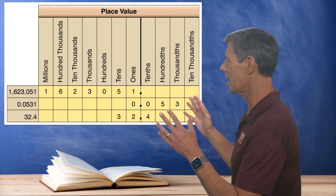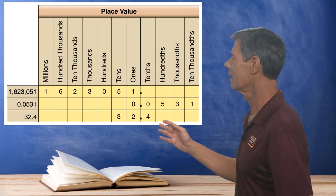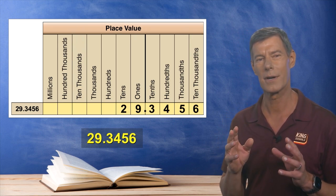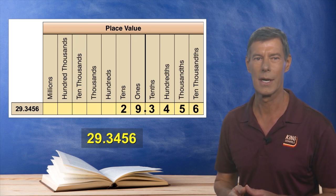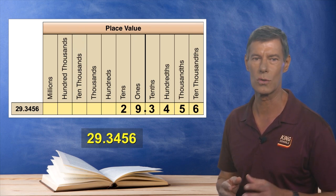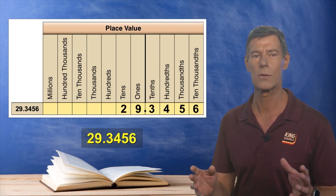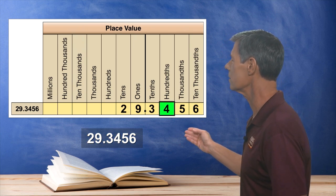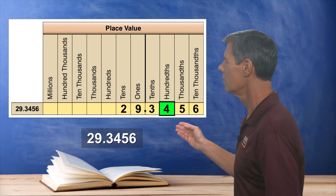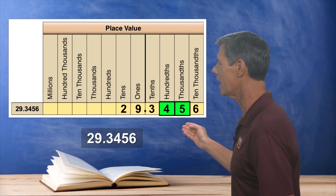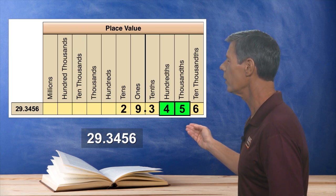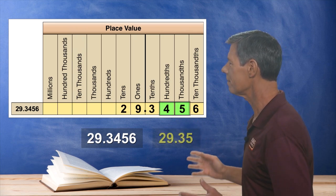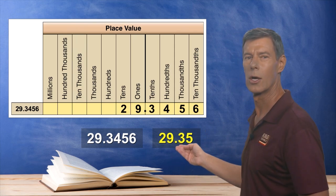Now let's say you measured 29.3456 inches with a very precise laser ruler. And you needed to round that into something more useful. Well, in our example, we want to round to the hundredths place. And using this chart, we know that the hundredths place is the four right here. So we'll look at the next number to the right of that. And since that number is five or greater, we can round up the four by one to a five. And we get a final rounded number of 29.35.